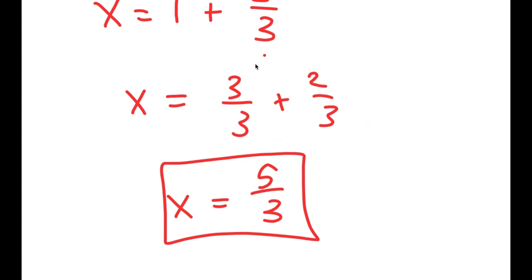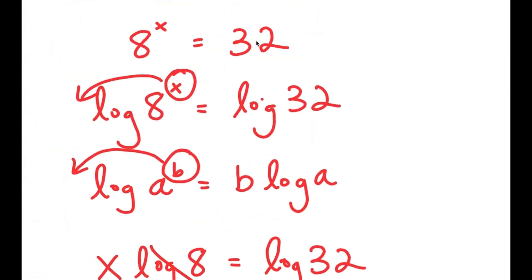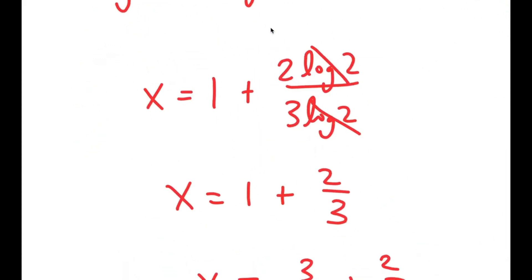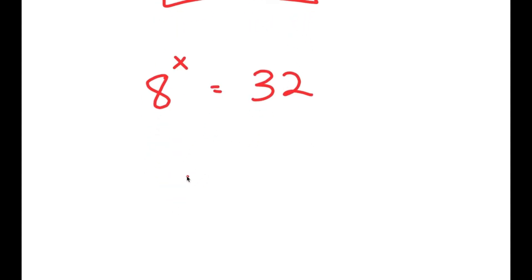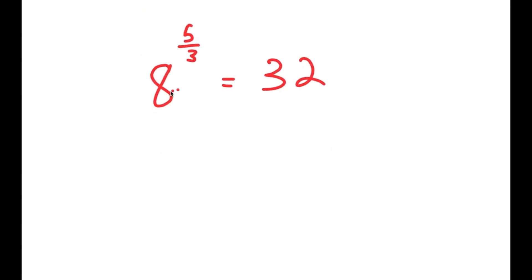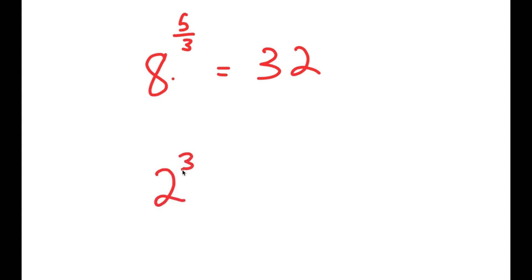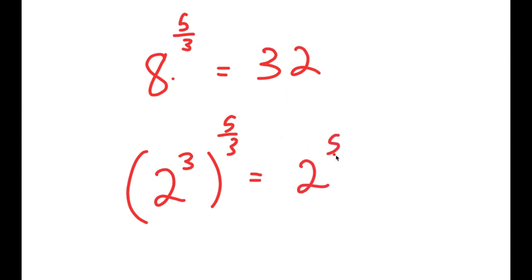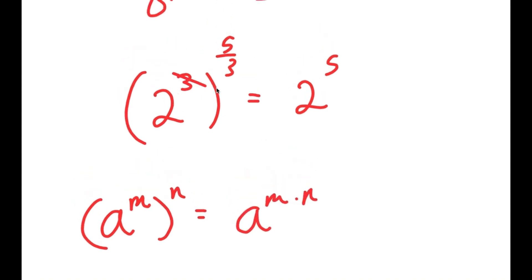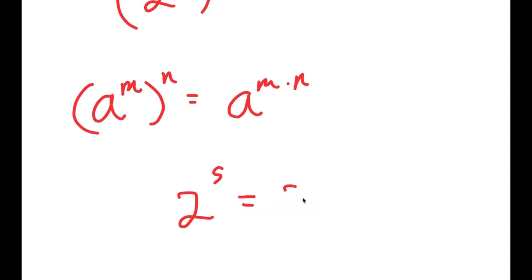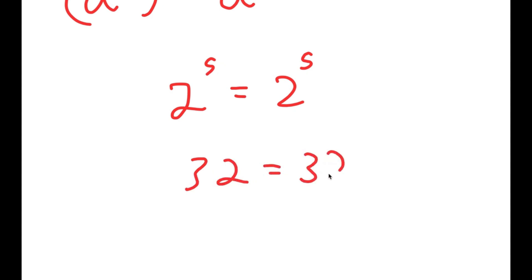Now, how do we know that this is the right answer? Going back, we have 8 to the power of x equals 32, and we're plugging in 5 over 3. So we get 8 to the power of 5 over 3 is equal to 32, which is the same thing as 2 to the power of 5. Since 8 is 2 to the power of 3, I get 2 to the power of 3 to the power of 5 over 3. Using the rule that a to the m to the n equals a to the m times n, the two 3s cancel out, and I get 2 to the power of 5 is equal to 2 to the power of 5, or 32 equals 32. This is correct.